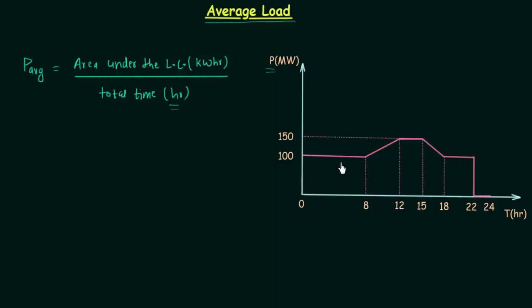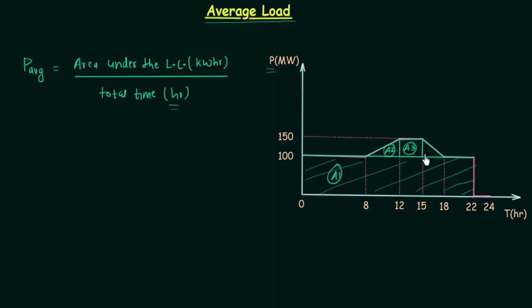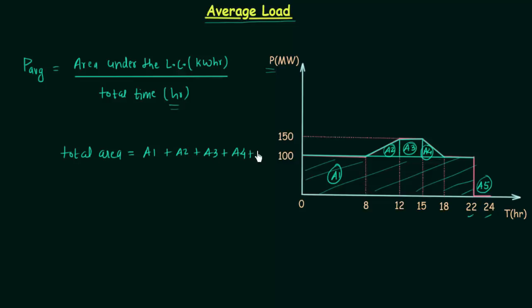The first shape in this figure is a rectangle — I will call its area A1. Then there is a triangle — area A2. After this we have another rectangle — area A3. Then we have another right-angle triangle — area A4. The final segment, from 22 to 24 hours, has area equal to zero because power equals zero, but I will still call it A5. So the total area equals A1 plus A2 plus A3 plus A4 plus A5.